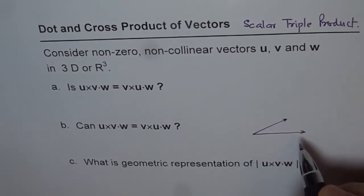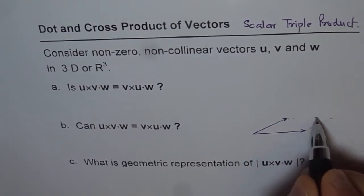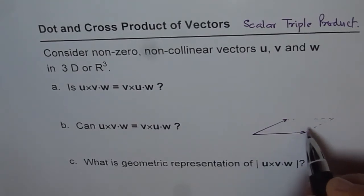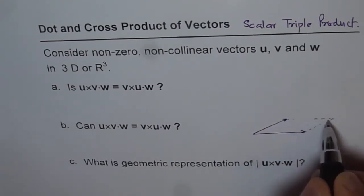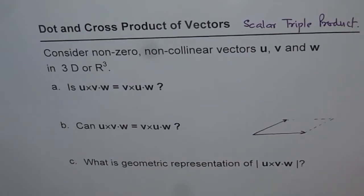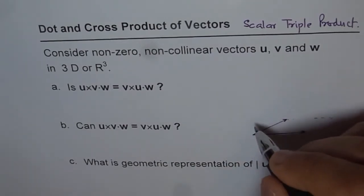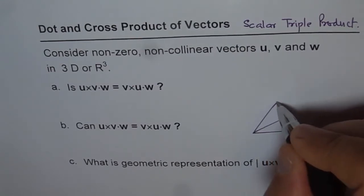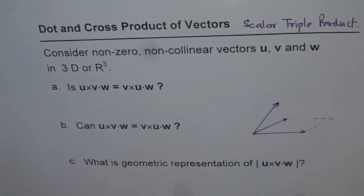Then what is u cross v? u cross v will be a vector which will give us area of these two vectors. So that is like the base, you can think. That is the area of u cross v, magnitude we are talking about. And let's consider now another vector w. And let's say the w vector is like this. This is my vector w.